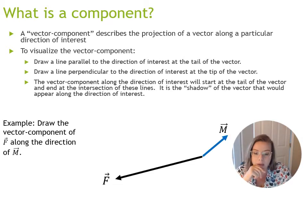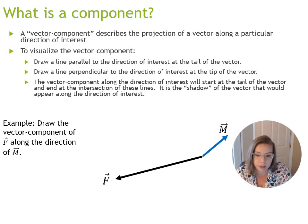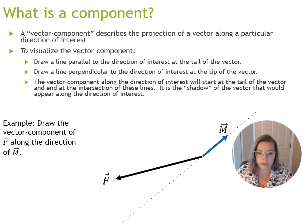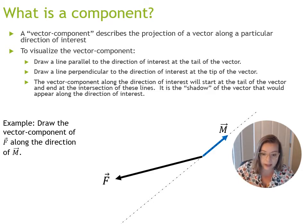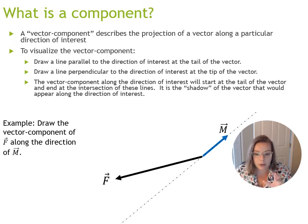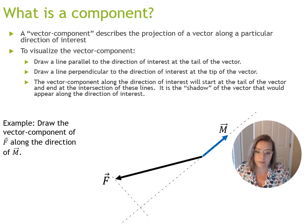We have two vectors here: vector F and vector M. Our goal in this example is to draw the vector component of F along the direction of M. Vector M defines a particular direction, and I want to draw a line through vector M to help visualize that direction. This dotted line represents the direction of M. To help us visualize the component of F that lies along this line, we draw another line perpendicular to it at the tip of F.